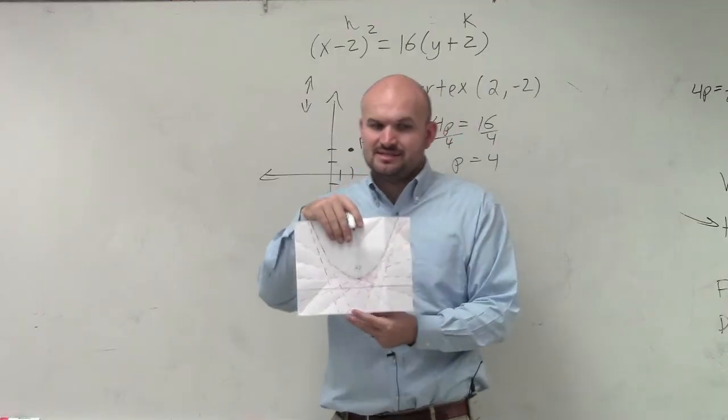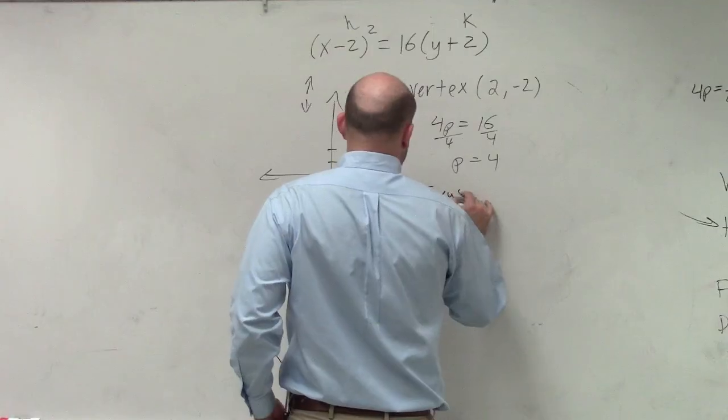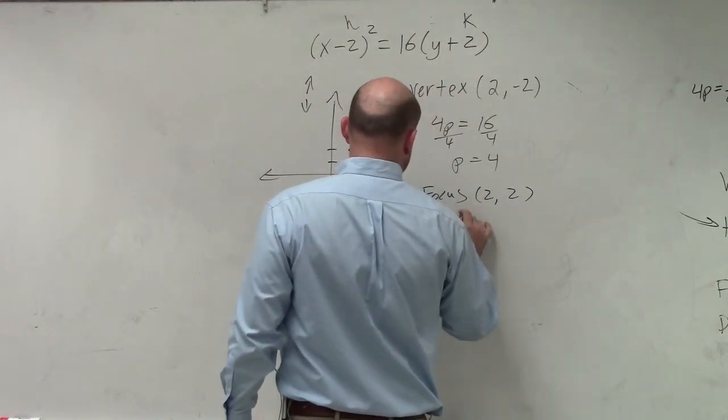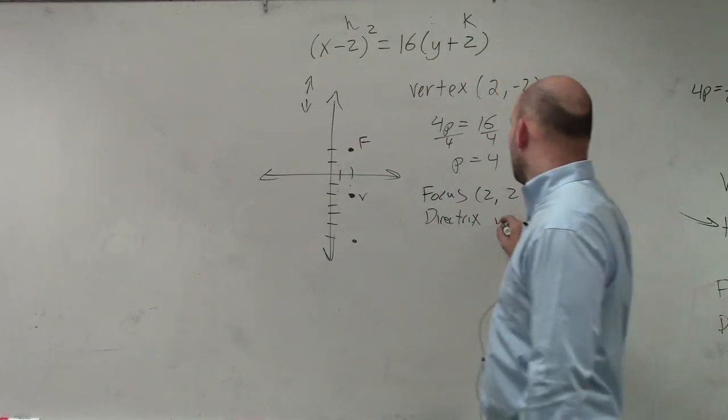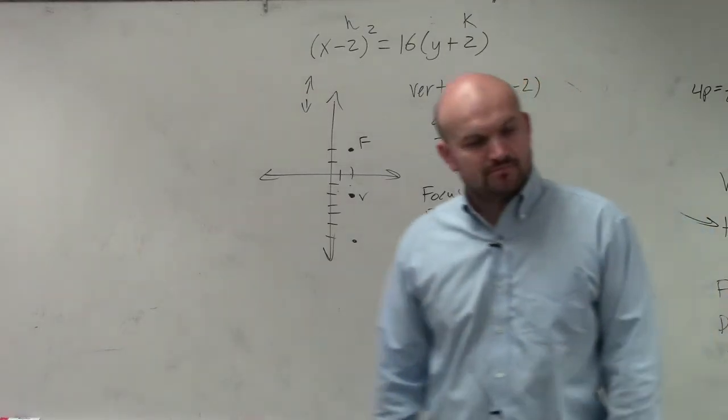So if it's horizontal, that means it's y equals. So my focus is at 2, 2, and my directrix is at y equals negative 6. That's it. Done.